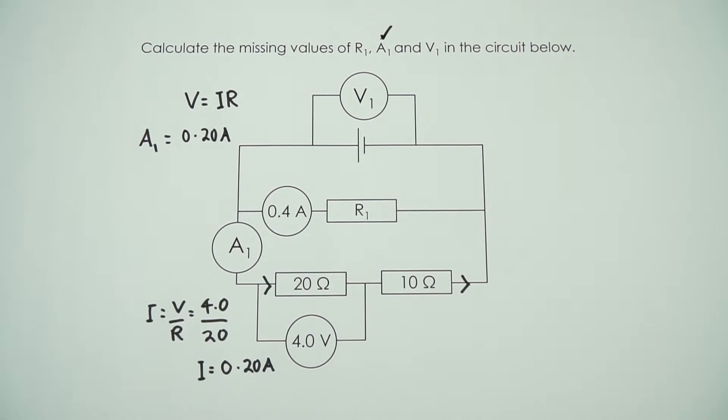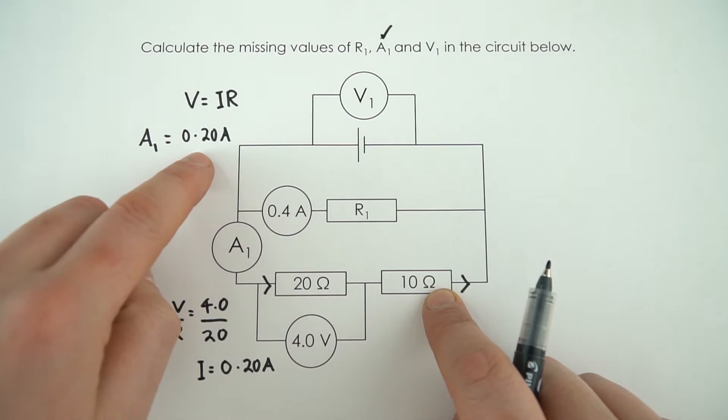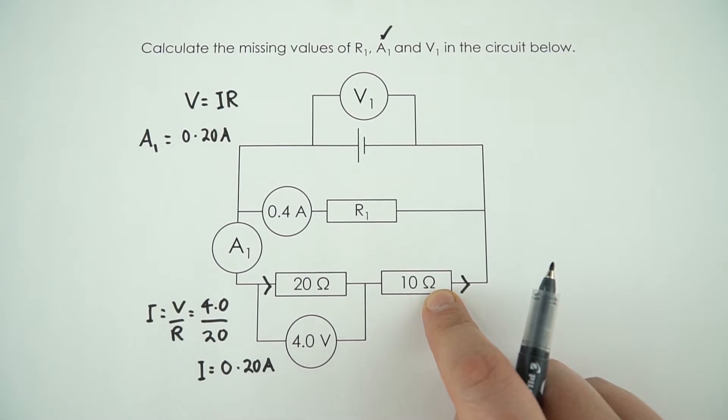What next? Well, we know the current through this resistor now, because we've just worked it out there, as 0.20 amps. So what we can then do is look at the potential difference across this. So we can say that V is equal to IR.